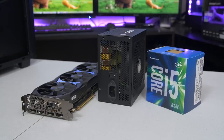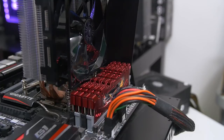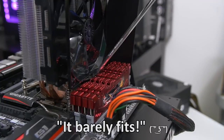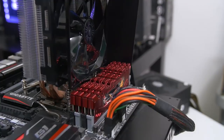As we've already gone over, your memory and motherboard have a defined set of specs that determines their compatibility, but the relationship between your RAM and CPU cooler isn't so cut and dry. This comes down to a matter of physical clearance based on the height of your DIMMs and its potential to interfere with your air or liquid cooler. Larger air coolers with wide heat sinks or multiple fans can often block access to your DIMM slots, leaving no room for installing your memory modules.